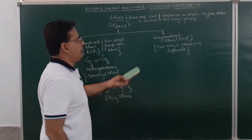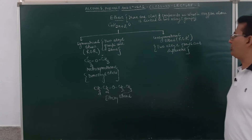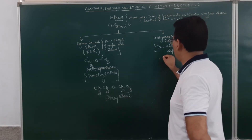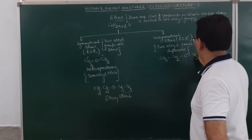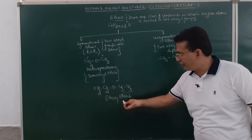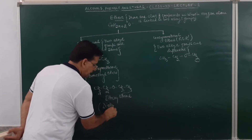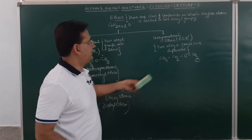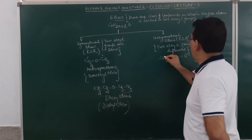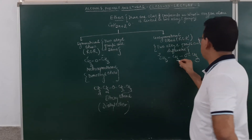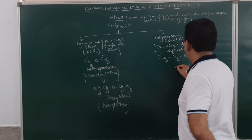Now when we talk about unsymmetrical ethers, these are ethers in which two different alkyl groups are attached to the oxygen atom. For example, CH3-CH2-O-CH2-CH3 — wait, if we take CH3-CH2-O-CH3, the common name of this is diethyl ether. Here the alkyl groups are different: one carbon (methyl) and two carbons (ethyl), so this is a methoxy ethane.